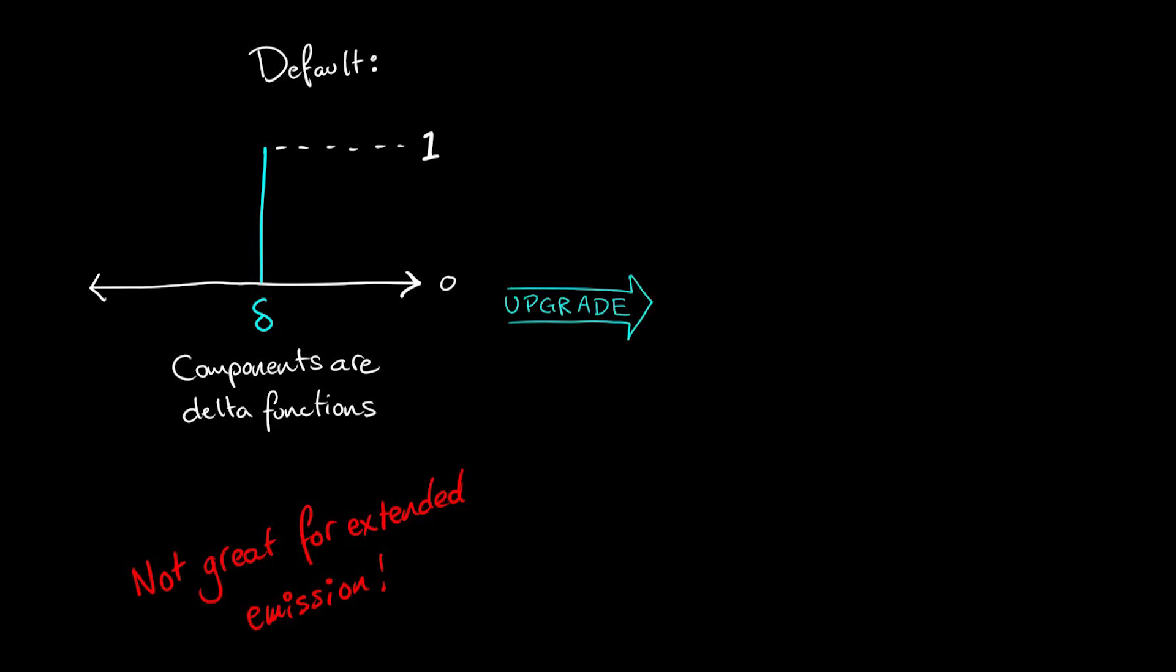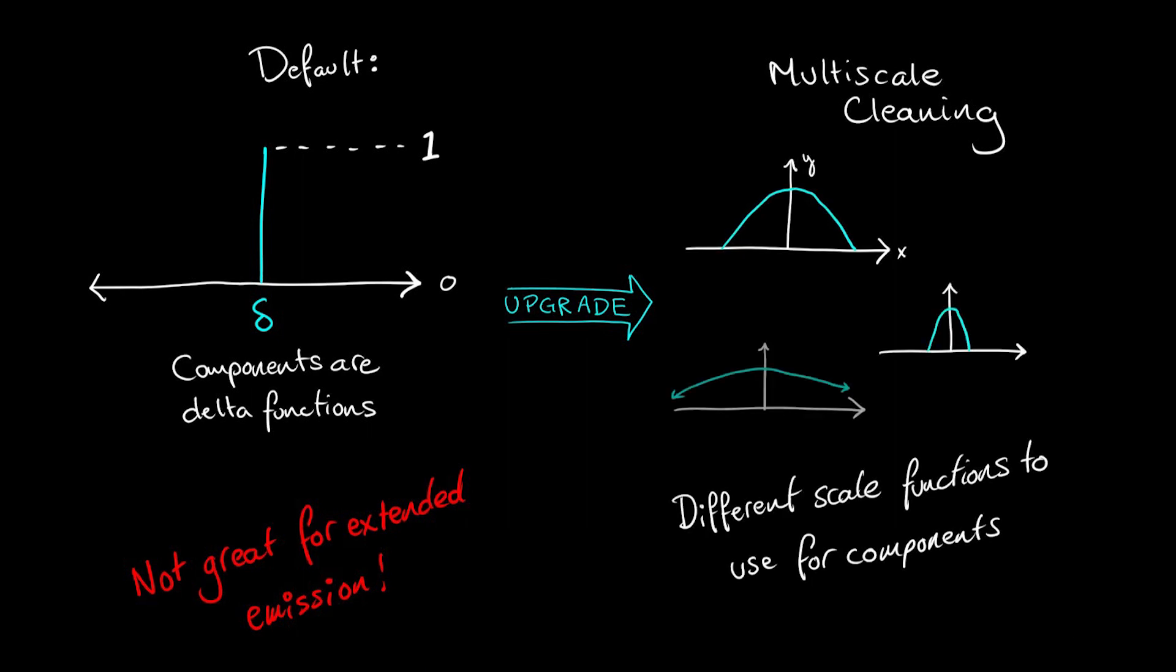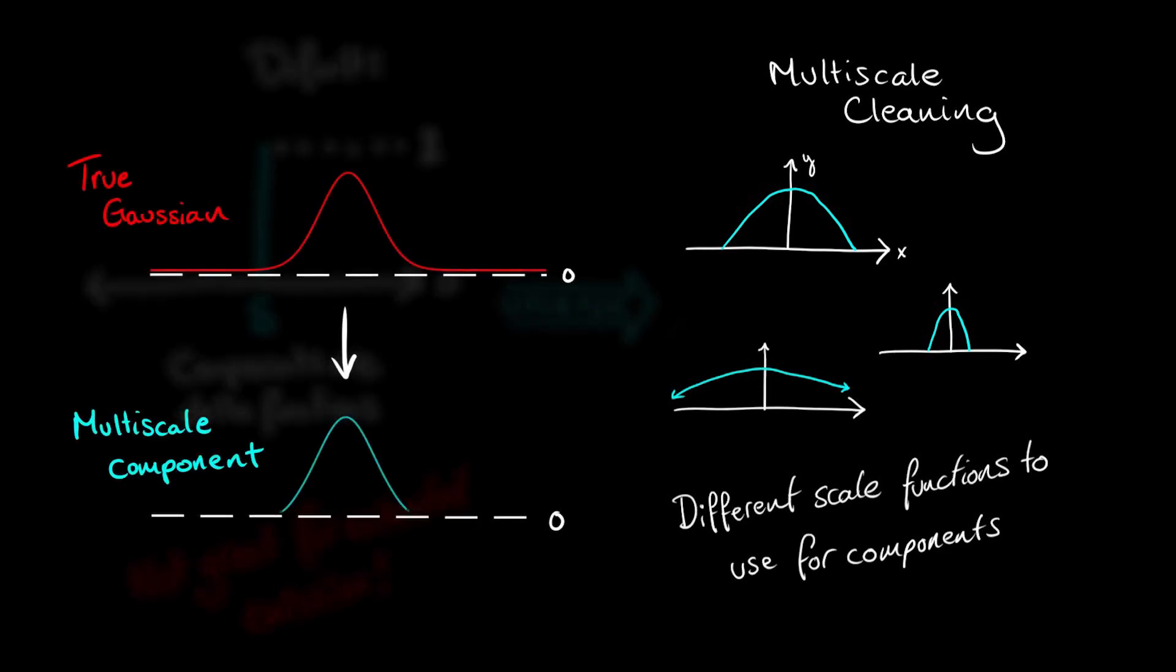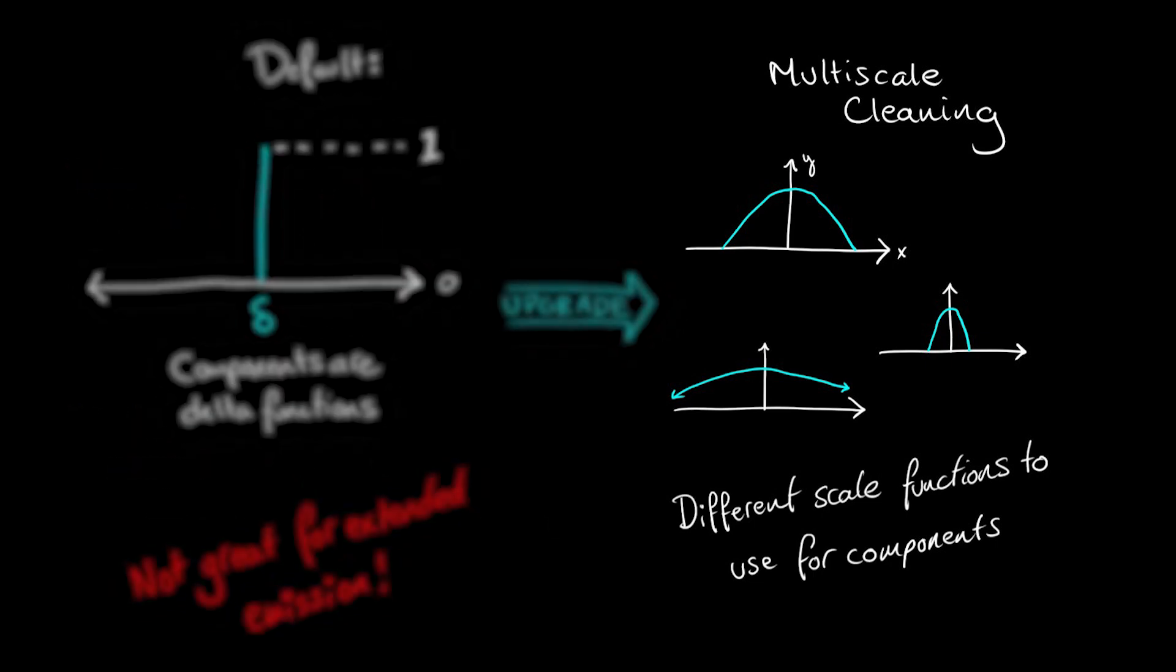To improve the CLEAN model for these cases, we can use a multi-scale approach, where we supplement the default delta functions with model components that are functions which approximate a Gaussian but have finite extent, ranging from a point source to roughly the size of the largest scale emission in the map.